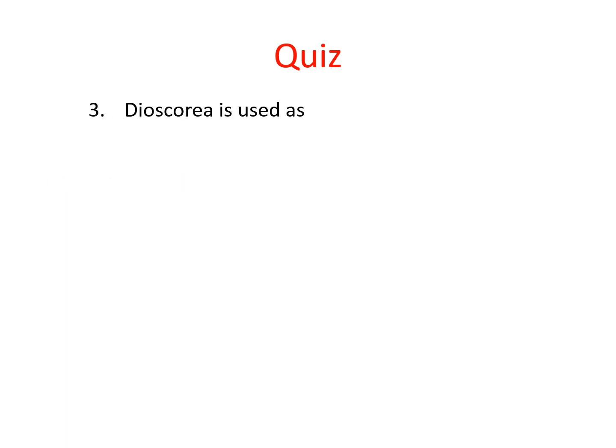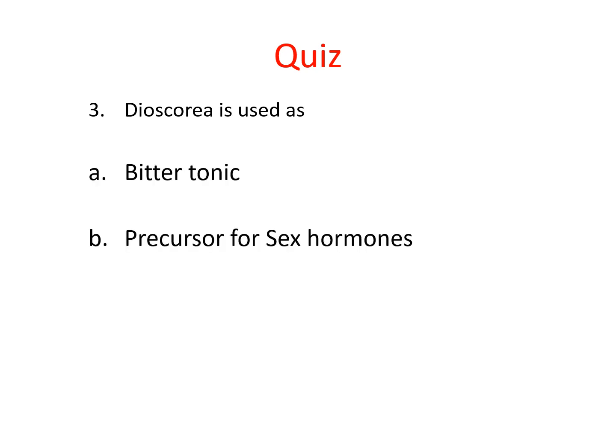The third quiz question is: Dioscoria is used as? Options are: bitter tonic, precursor for sex hormones, febrifuge, or all of the above. The correct answer is precursor for sex hormones.